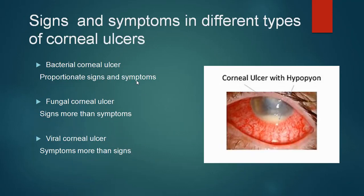To recapitulate, signs and symptoms in bacterial and fungal ulcer are different. In bacterial corneal ulcer, there are proportionate signs and symptoms, while in fungal corneal ulcer, signs are more than symptoms. Here on the right side you see a patient with a corneal ulcer — a markedly congested eye with corneal ulcer and a hypopyon.